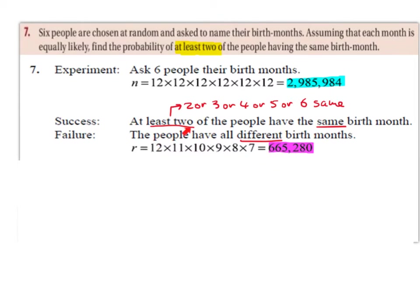So the first person — if we want all six people to have a different birth month, the 12 here represents the first person. Whoever the first person is, it doesn't matter which of the six it is, because order doesn't matter here — these are combinations. So the first person has a choice of 12 months. But for the second person, in order for it to be a failure they all have to have different birth months. So whatever birth month the first person has — say it's March — then March is already used and the second person only has 11 months left to choose from.